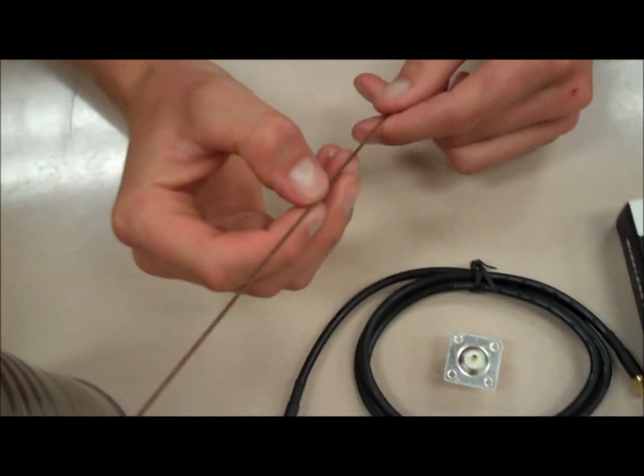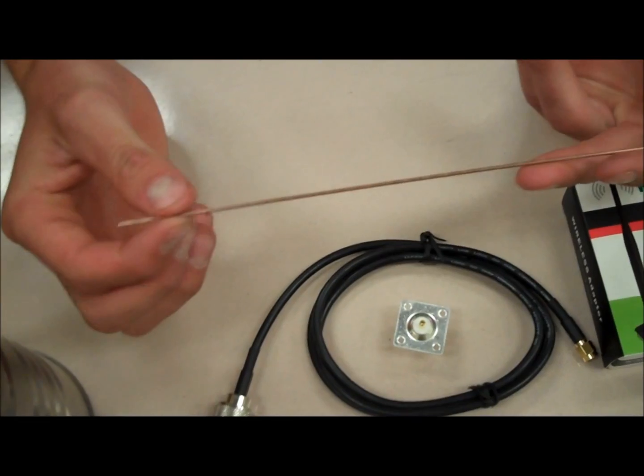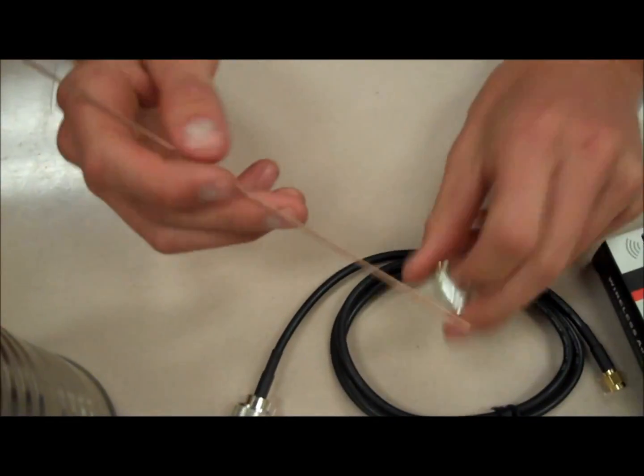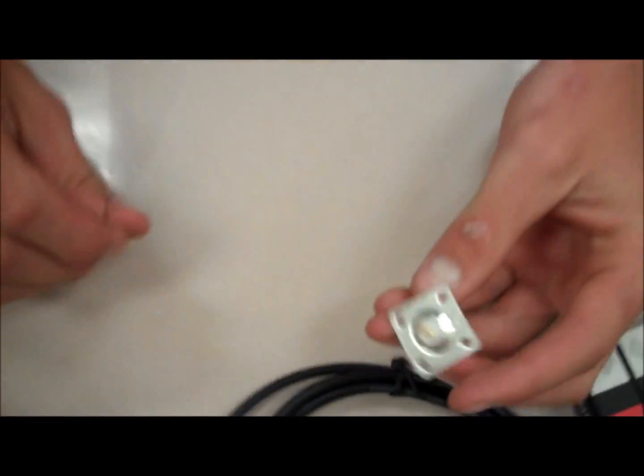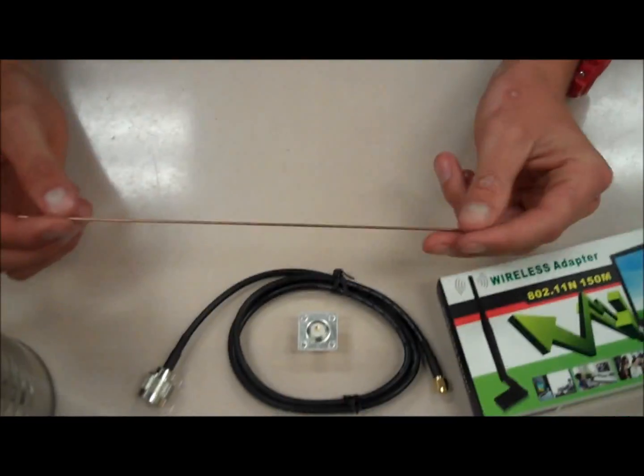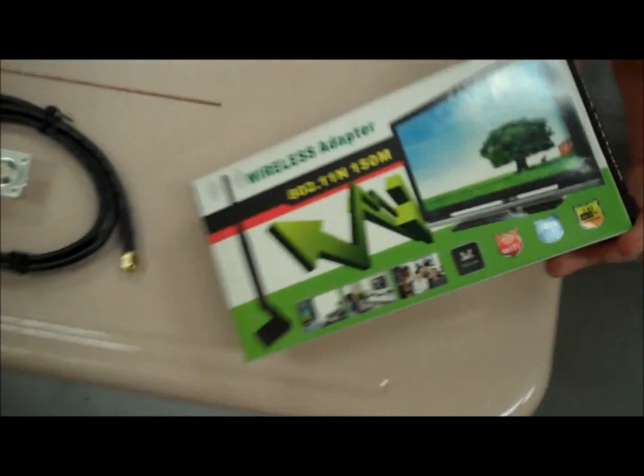The next thing we have is a piece of copper wire. I'm not sure what gauge this is, I just had it laying around, but you want to make sure it fits in there nicely because later on we're going to solder it in there. You just need probably two or three inches of it. We'll cut it down to a specific length later on.